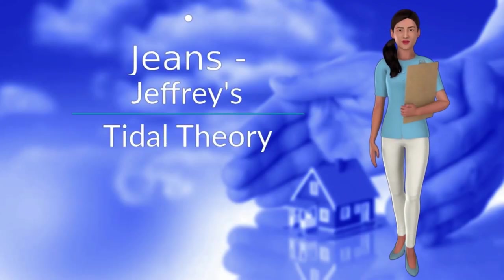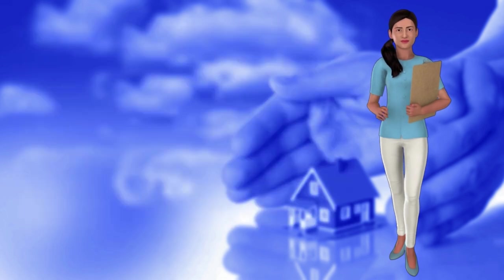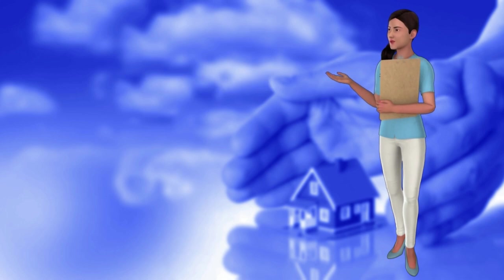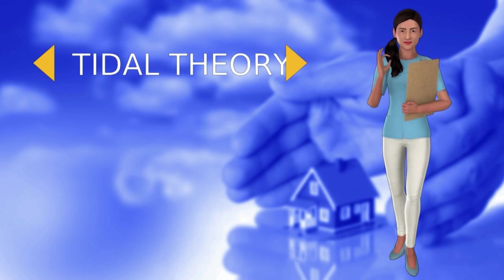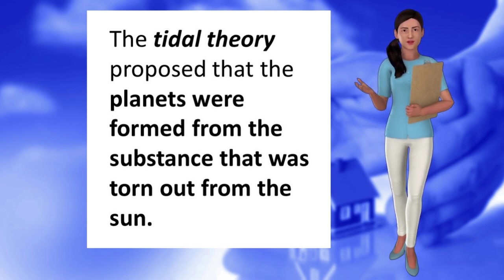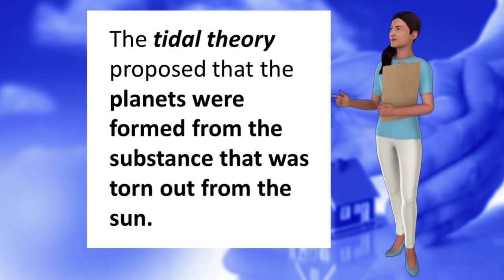The tidal theory of the origin of the solar system was proposed by Sir James H. Jeans and Sir Harold Jeffries. The two proponents suggested a dualistic theory in which the sun and planets were produced in different mechanisms. The tidal theory proposed that the planets were formed from the substance that was torn out from the sun as a speeding massive star passed near the sun. It pulled off material due to gravitational attraction. The torn off material subsequently condensed to form planets.